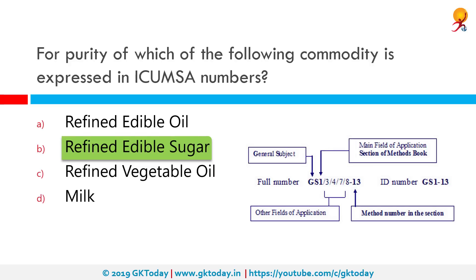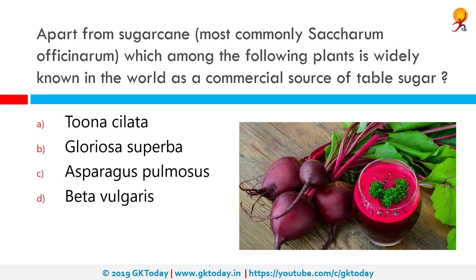Apart from sugarcane, which is most commonly used to make sugar, what is the second most common commercial source of table sugar? The correct answer is Beta vulgaris, or beetroot. This is also known as sugar beet or chukandar, and has been widely used as a commercial crop for table sugar.